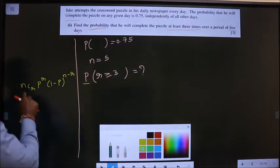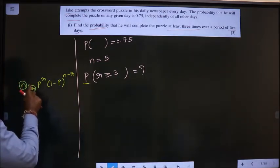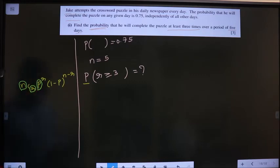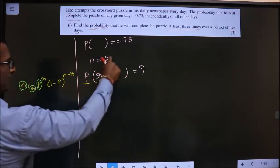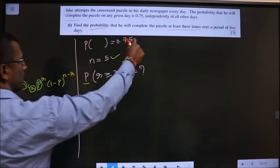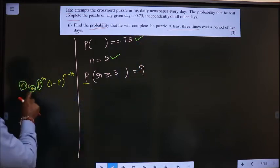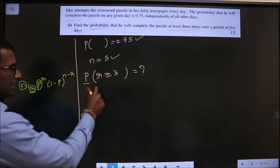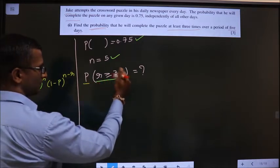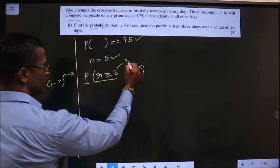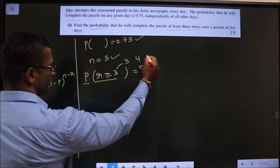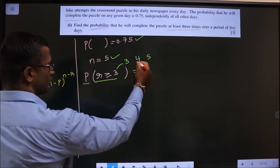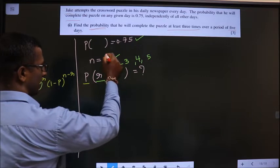Now I should decide the value for n, r, and p. So value for n is 5, value for p is 0.75. Now let us decide the values for r. Here r is greater than or equal to 3, that means r will be 3 or 4 or 5. I stop at 5 because n is 5.